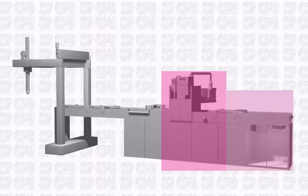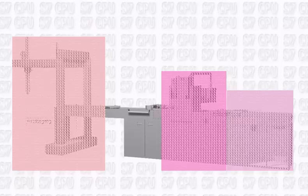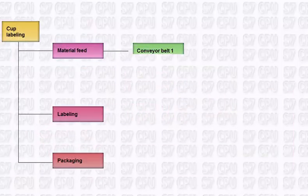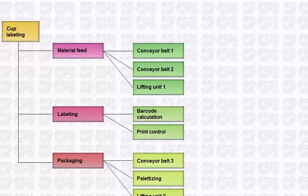a labeling unit and the packing unit. The automation designer can subdivide each technological unit into further independent subtasks such as conveyor belts, lifting units, etc.